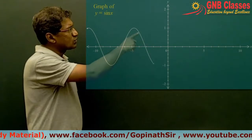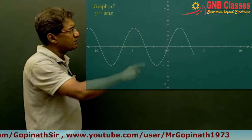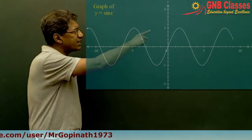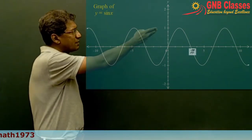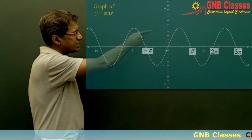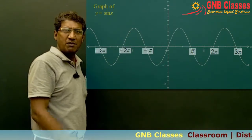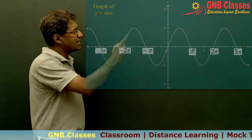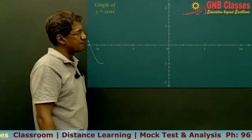The next curve is y = sin x. It looks just like a wave, passing through the origin and intersecting the x-axis at π, 2π, 3π, and in the negative direction at −π, −2π, −3π, and so on.